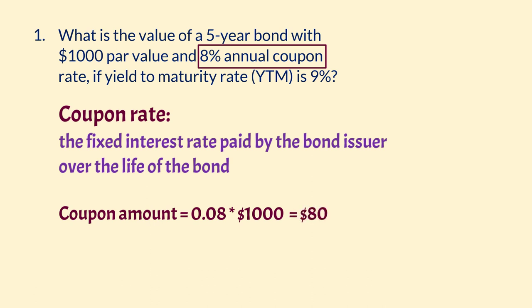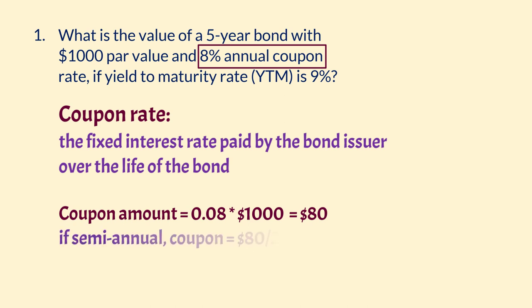That is, the interest or coupon payment is $80 annually. If the coupons or interest were paid semi-annually, as you will see in the second example, then this $80 will be divided by 2.